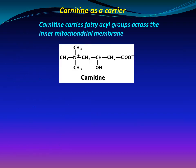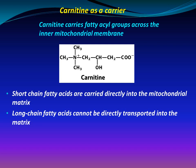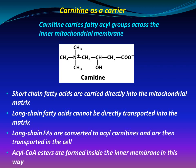Carnitine as a carrier: carnitine carries fatty acyl groups across the inner mitochondrial membrane. Short-chain fatty acids are carried directly into the mitochondrial matrix. Long-chain fatty acids cannot be directly transported into the matrix; they are converted to acyl-carnitines and then transported into the cell. Acyl-CoA esters are formed inside the inner mitochondrial membrane in this way.